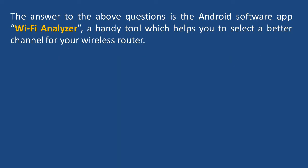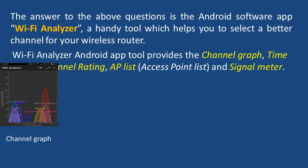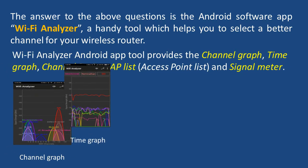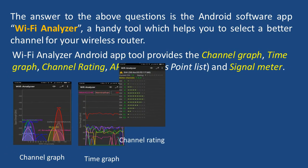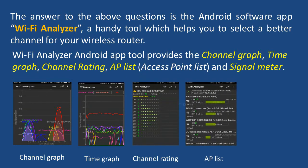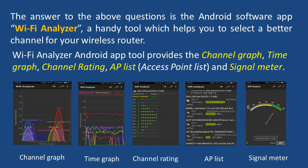The answer to these questions is the Android software application Wi-Fi Analyzer, a handy tool which helps you to select a better channel for your wireless router. Wi-Fi Analyzer provides the channel graph, time graph, channel rating, access point list, and signal meter. Using these you can select the better channel and optimize your Wi-Fi.